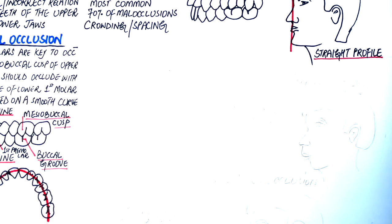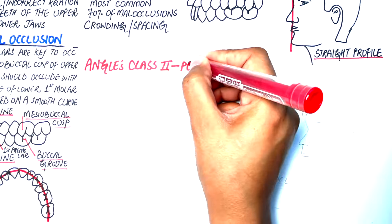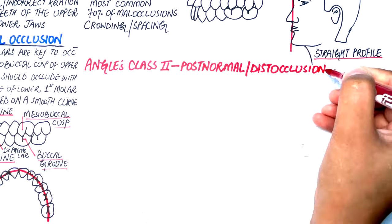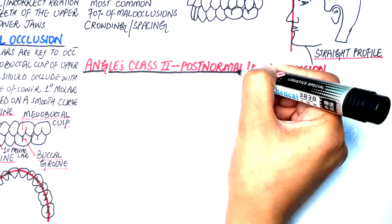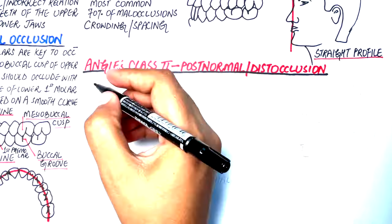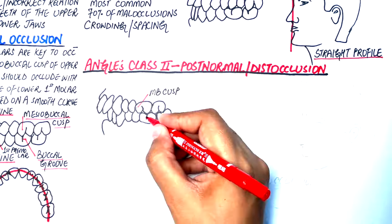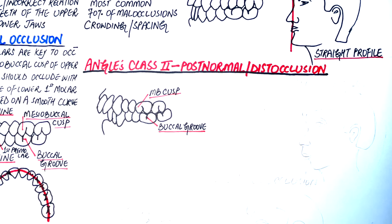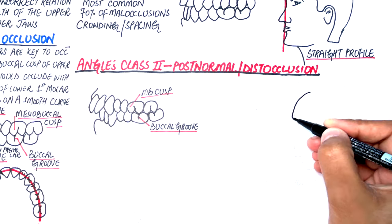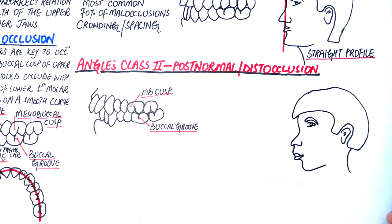Angle's Class 2 malocclusion is a post-normal occlusion, also known as a distocclusion, as there is a distal relationship of the mandibular first molar compared to the maxillary molar. To be precise, it is defined when the mandibular teeth are distal to the maxillary teeth. The mesiobuccal cusp of the maxillary first molar lies anterior to the buccal groove of the mandibular first molar. This anterior position of the maxillary first molar should be at least half a cusp. The patient will have a convex facial profile.